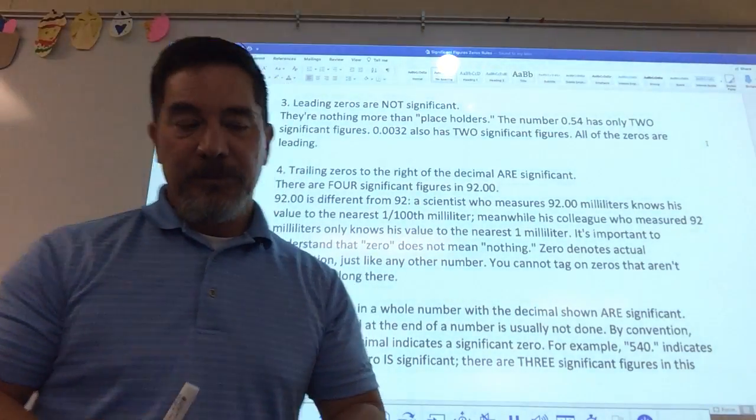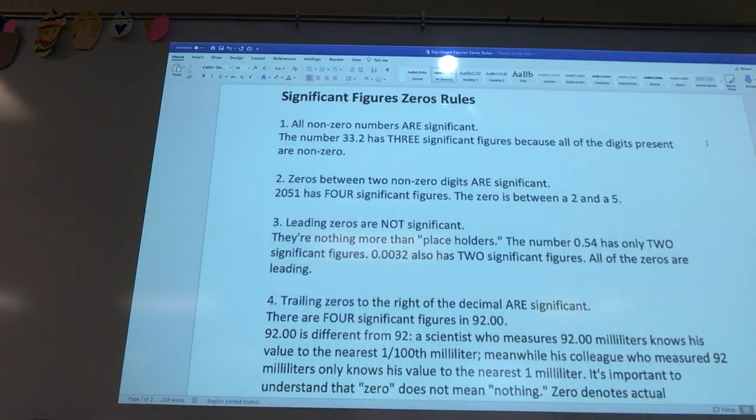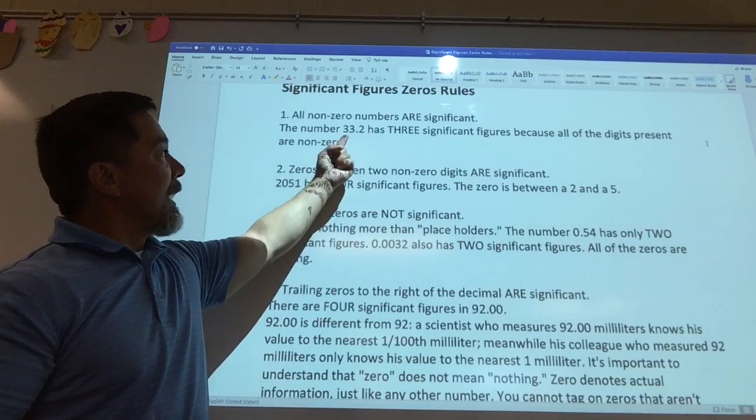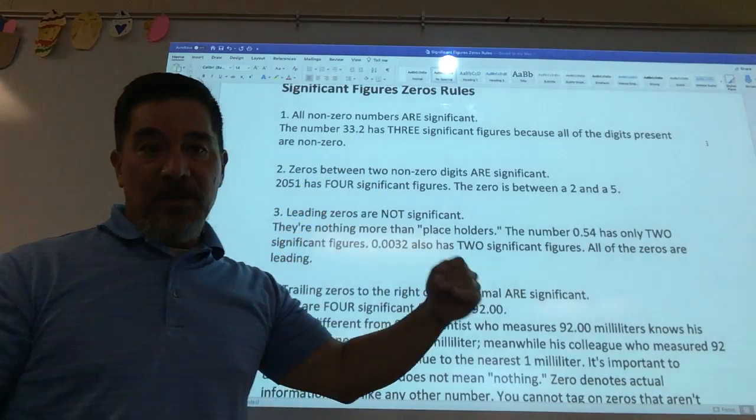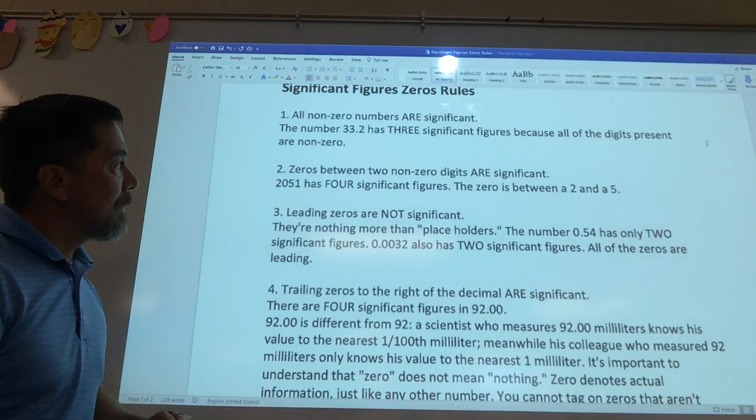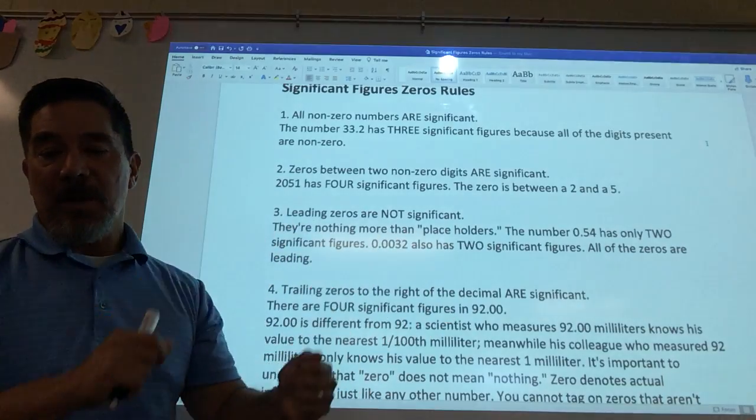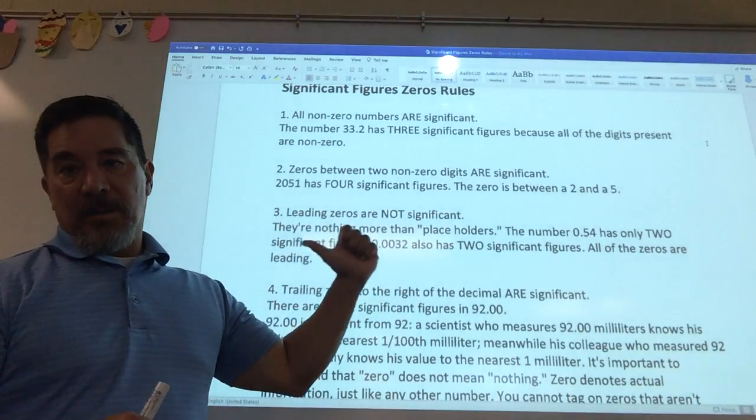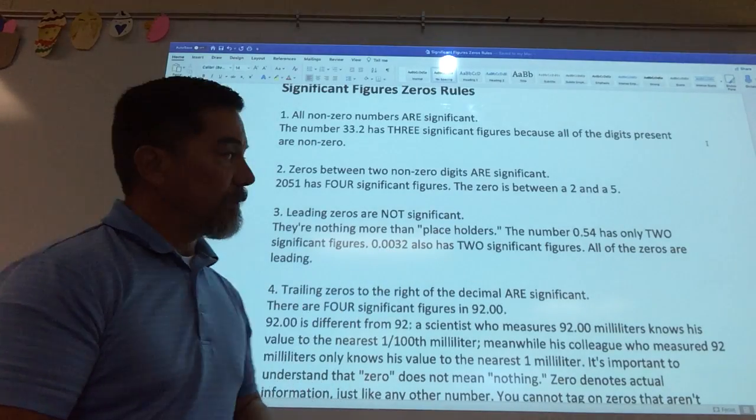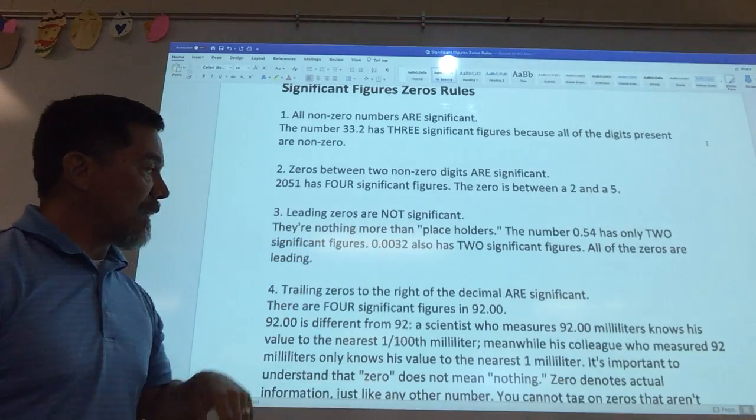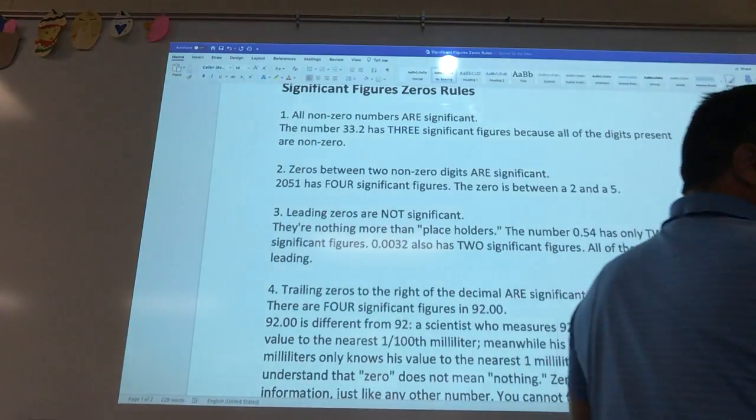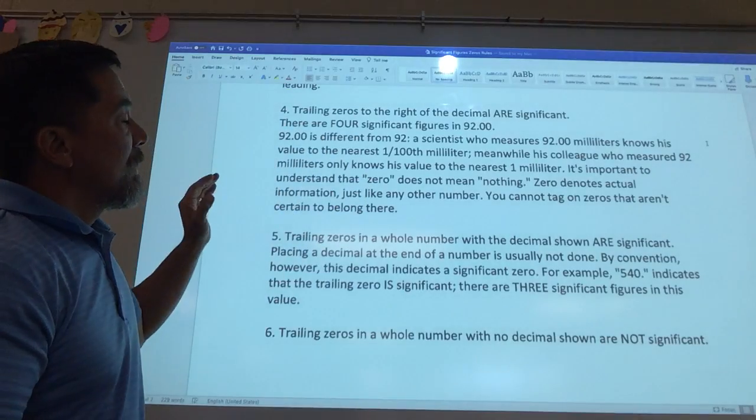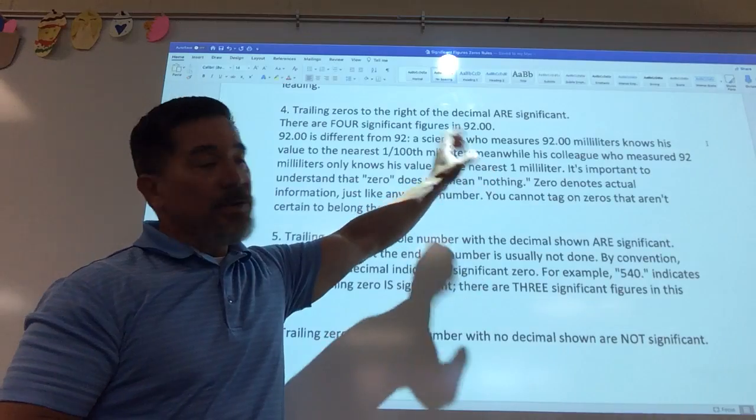So let's go back, and what do we know? Well, we know now, hopefully, for the first time, that all non-zero numbers are significant. Whether they're to the right of a decimal or not, if there's no zeros in them, they all count. Zeros that come between non-zero numbers count. Leading zeros in front of non-zero numbers never count. Leading zeros never count. And now we're starting to get into the trailing zeros, and we know that trailing zeros to the right of a decimal count.